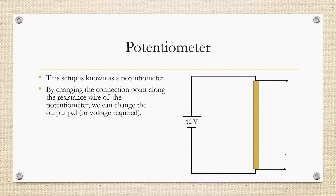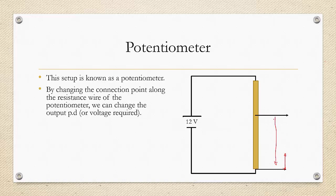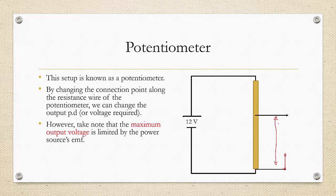By changing the connection point along the resistance wire of the potentiometer, we can change the output potential difference. You can make it smaller or bigger depending on where you connect. However, take note that the maximum output voltage is always limited by the power source EMF — in this case, the maximum output voltage is 12 volts.